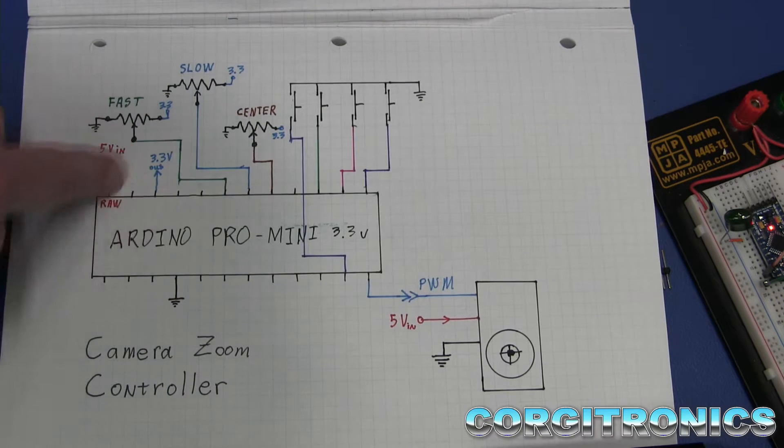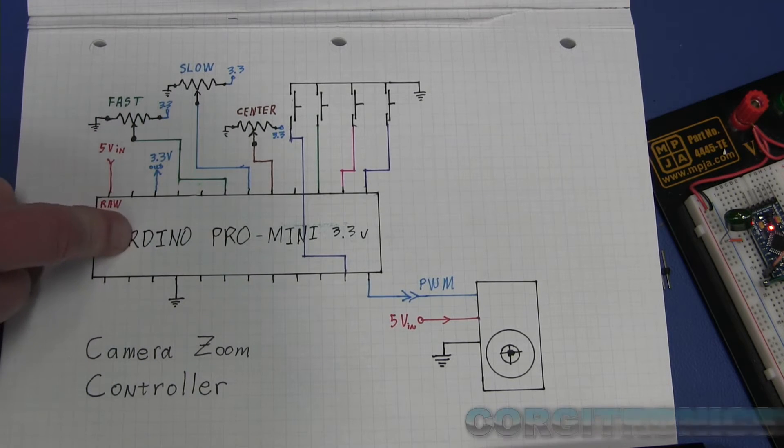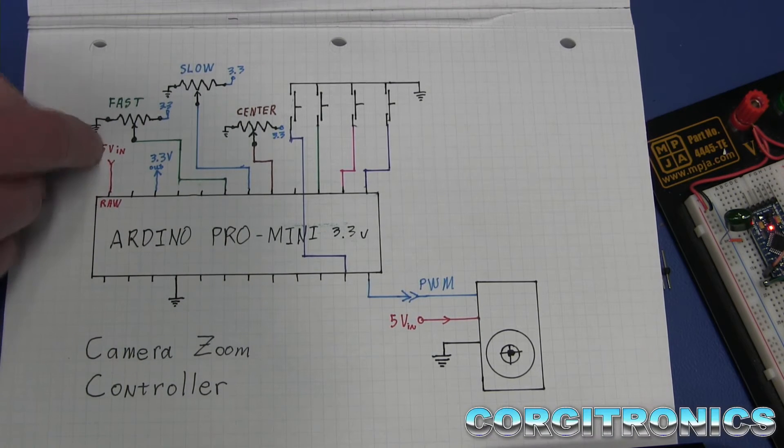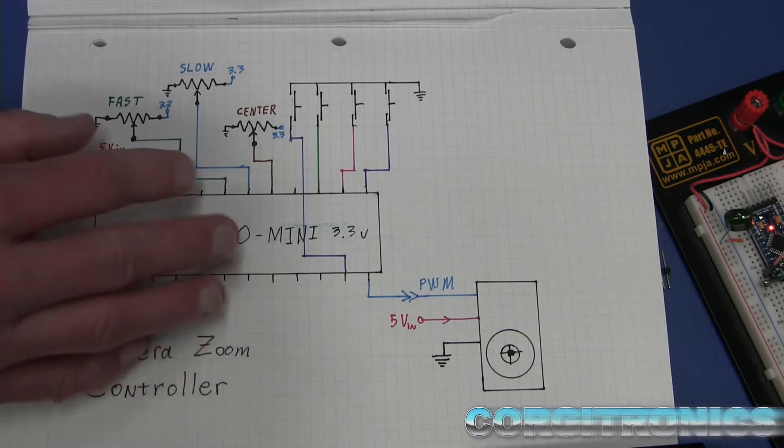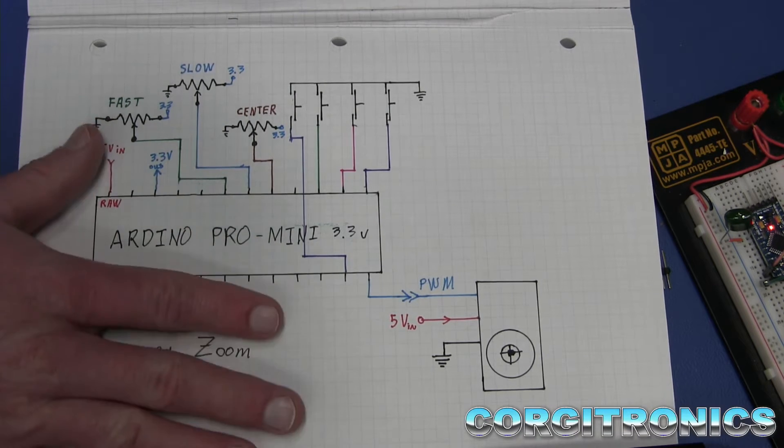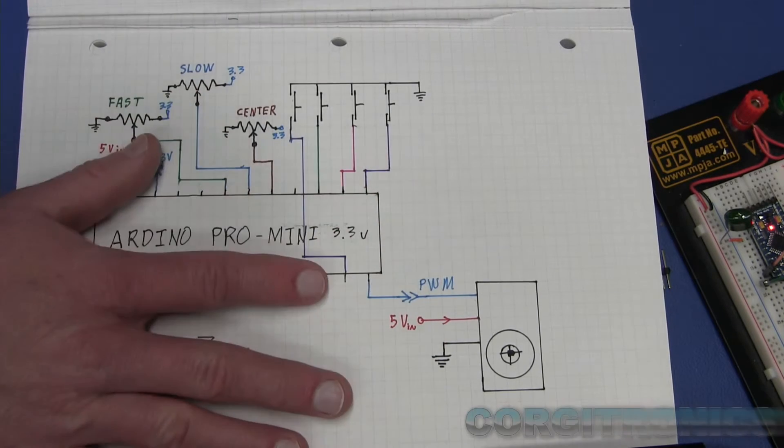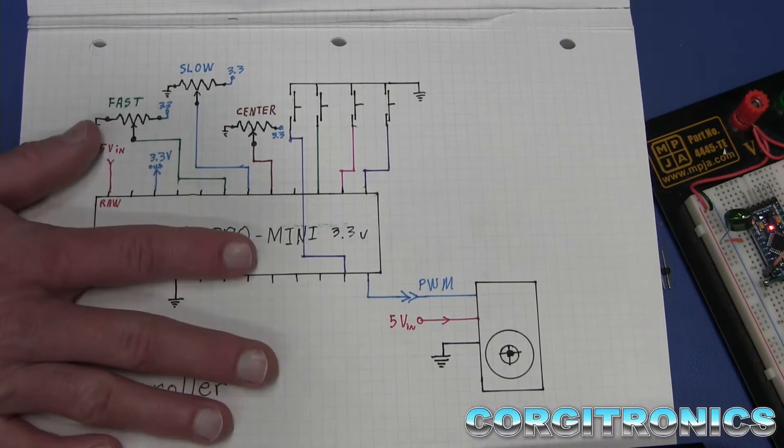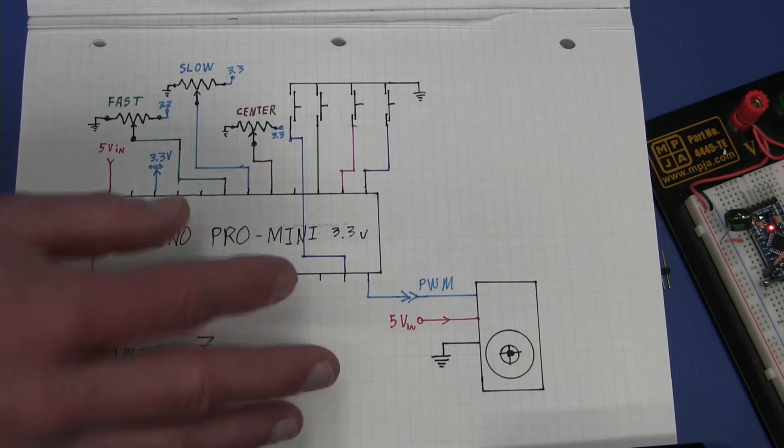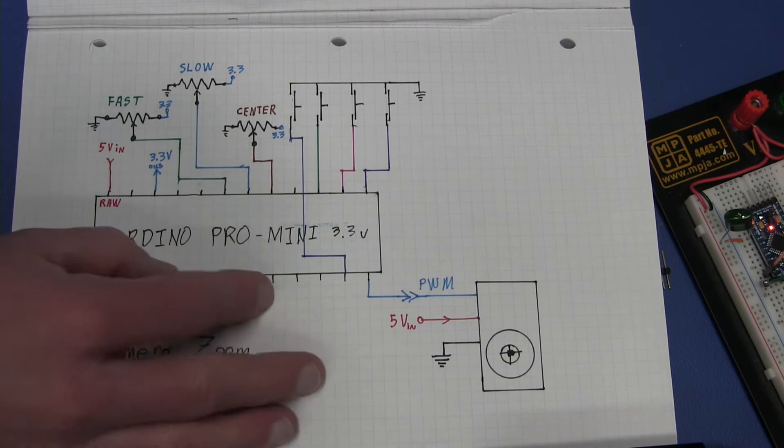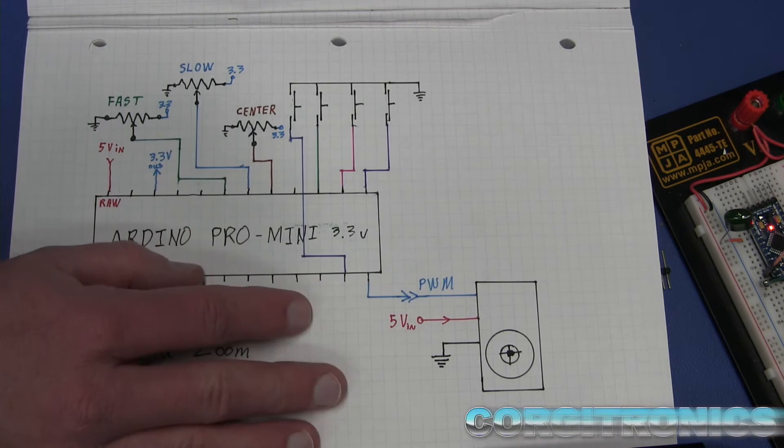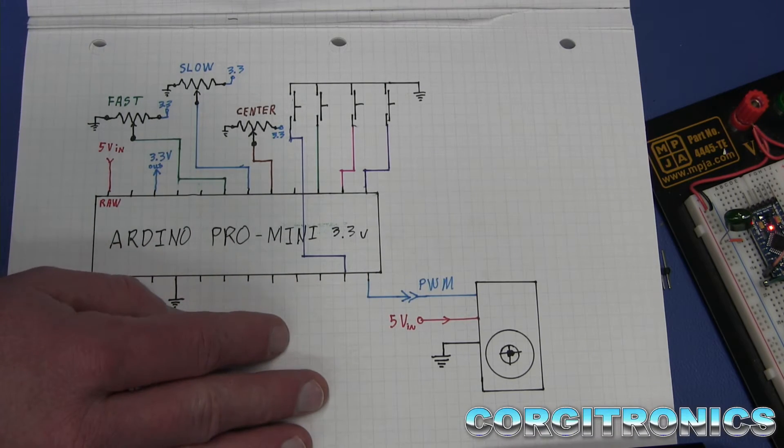The Pro Mini has its own voltage regulator on it. So we're powering it with 5 volts in on the raw pin. And I'll try to provide a little diagram, a schematic of that and the source code. Source code is really simple. There's a library called servo for Arduino. And you just convert the number, do some basic number conversions. There are plenty of examples out there.